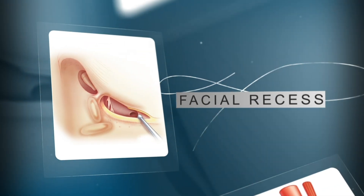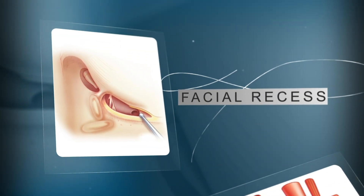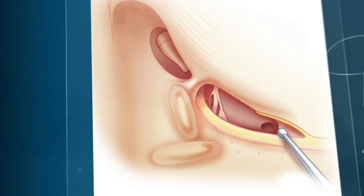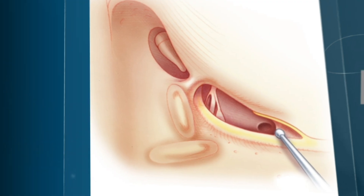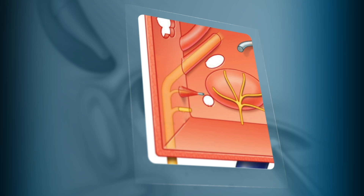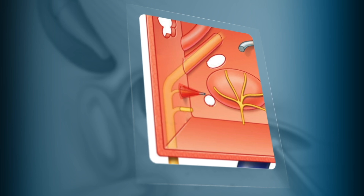You guessed it right, absolutely right — we are talking about the facial recess. Facial recess is an anatomical area that is present near the posterior wall of the middle ear where you have the pyramid.